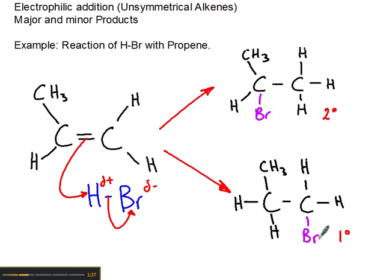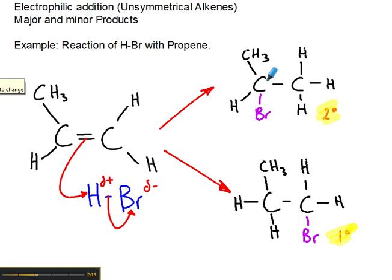There's a specific reason why we can get two products. The secondary carbocation is more stable than the primary carbocation. That's because with the primary, you've only got one carbon inducing or pushing its electrons. If you've got a methyl group or a larger carbon group, big groups tend to push their electrons onto the carbocation to stabilize that positive charge. With the secondary carbocation, we've got two groups pushing their electrons onto it and stabilizing the positive charge.